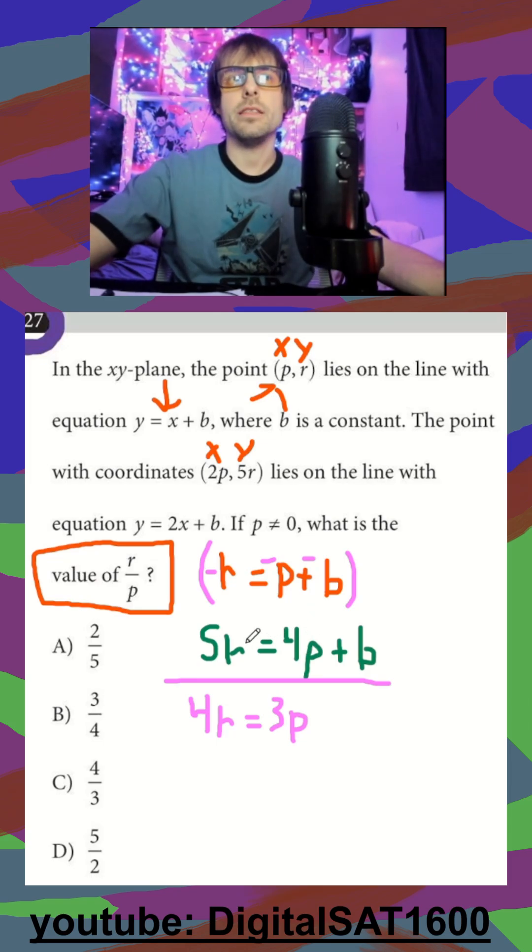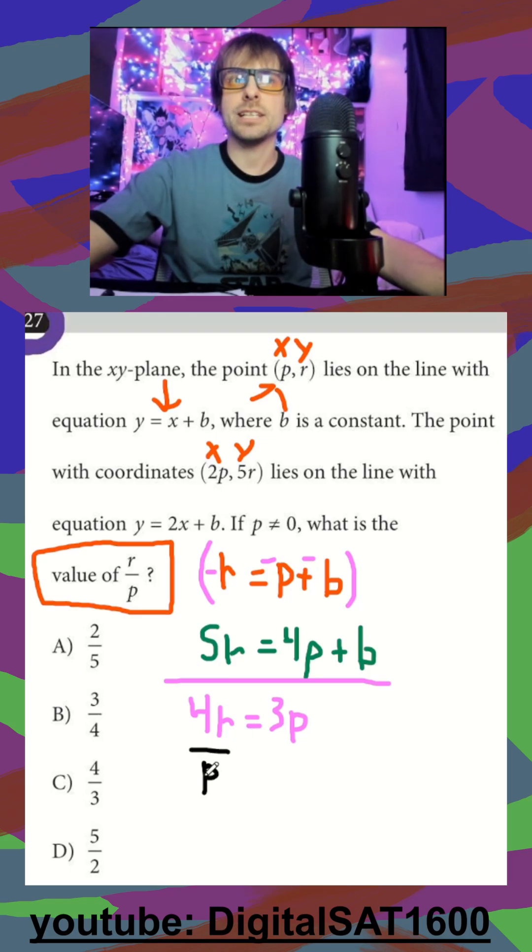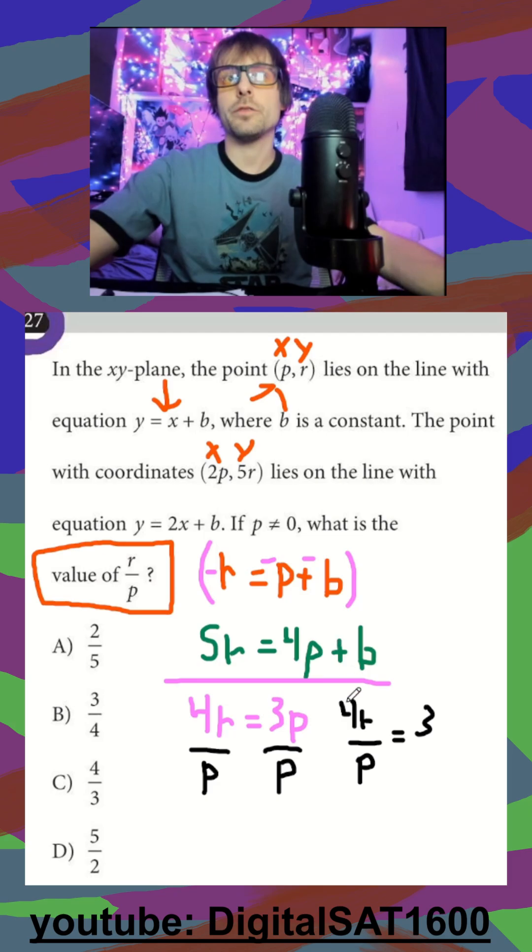And then finally, they want literally what is r over p. So that's my goal. I want to get r divided by p. So I can divide both sides by p. And I get 4r over p is equal to 3. And my final step here is to get r over p. I have to get rid of that 4. Divide both sides by 4. My 4s cancel out. And r over p is equal to 3 over 4. Answer choice B.